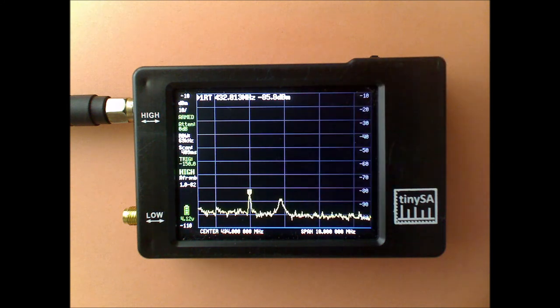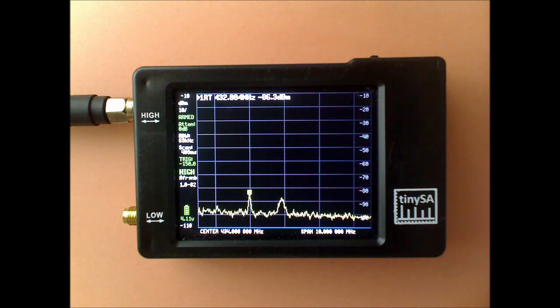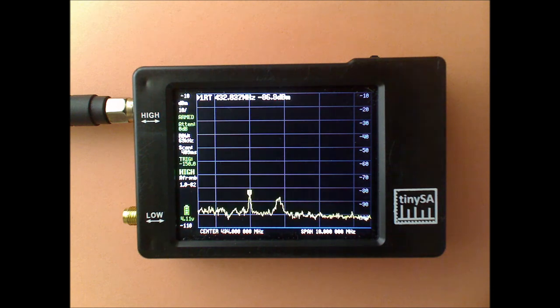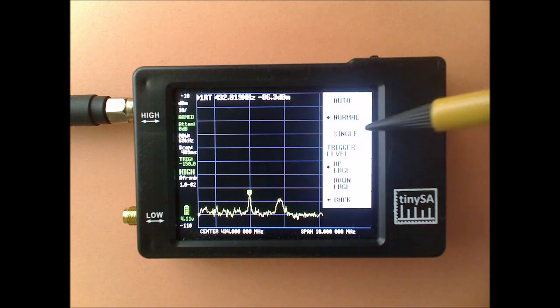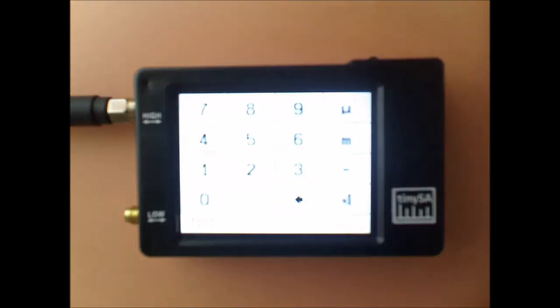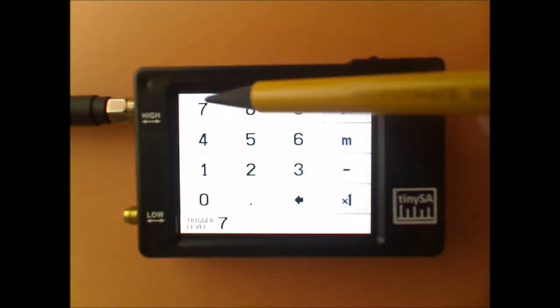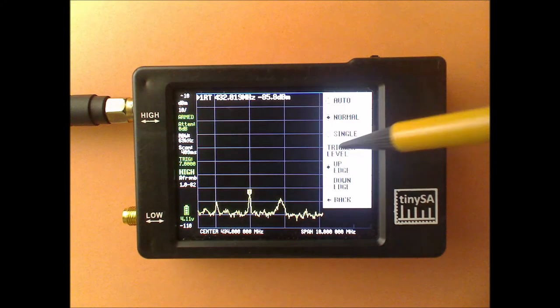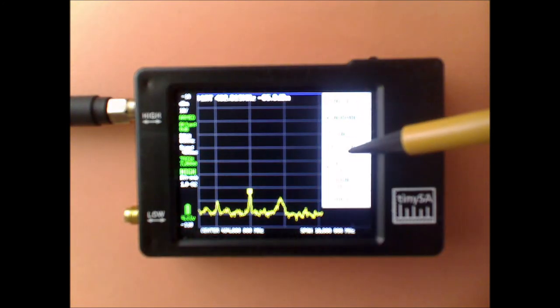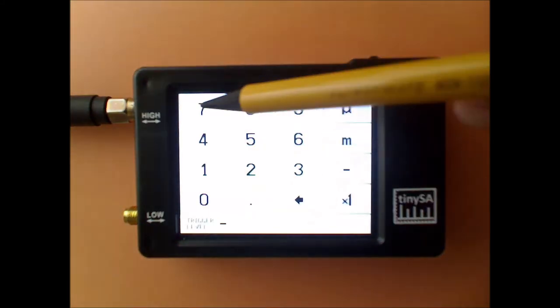One way to do it is put the TinySA in normal trigger mode, and then you have to set the trigger level. And I'm setting the trigger level to minus 70.